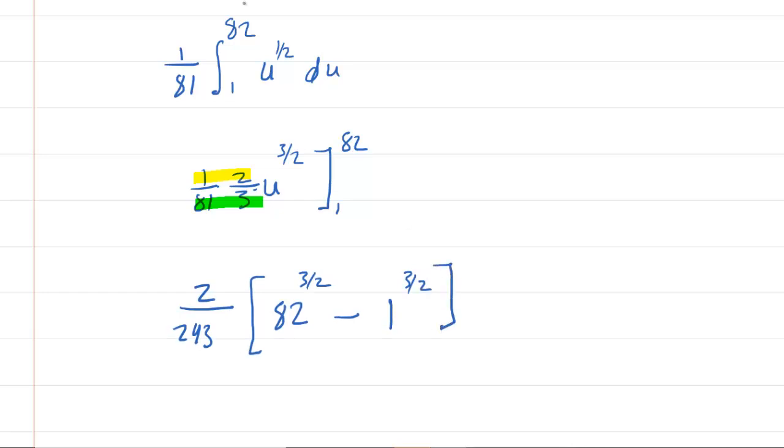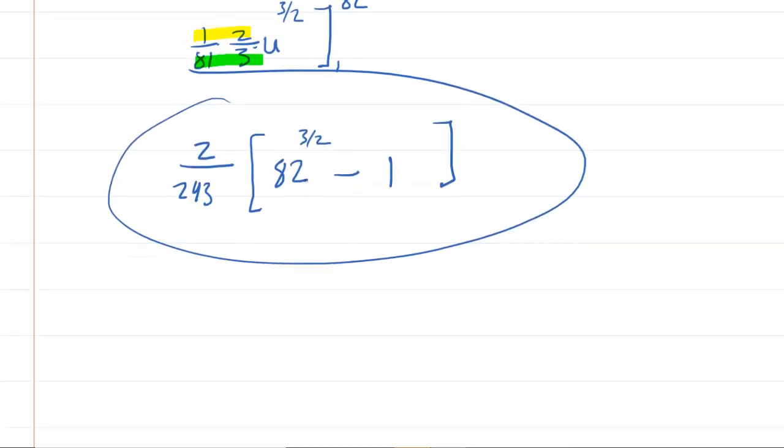Now one to the three halves is just one, so you can simplify that. There is the answer to your question. For any purists out there who don't really like 82 to the three halves written in that manner, we can go a little bit further.